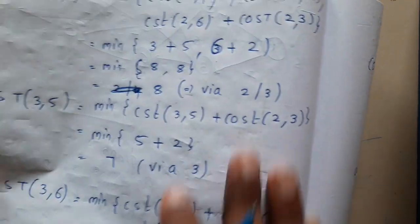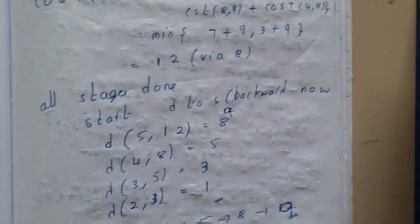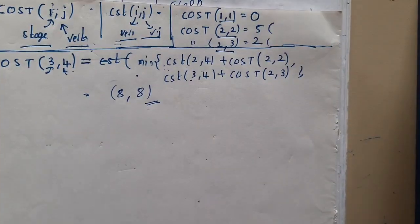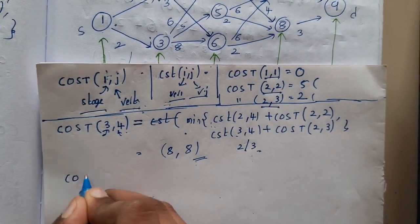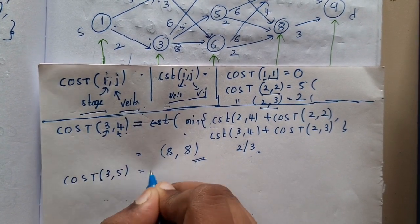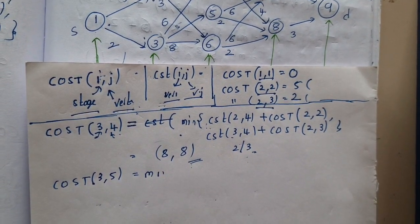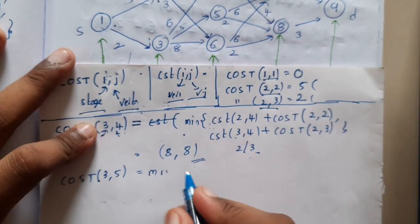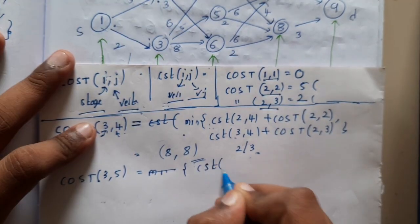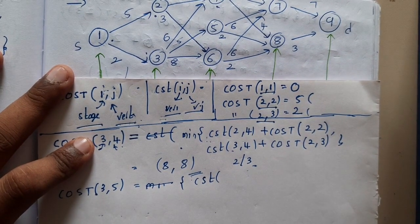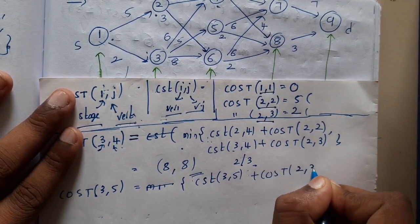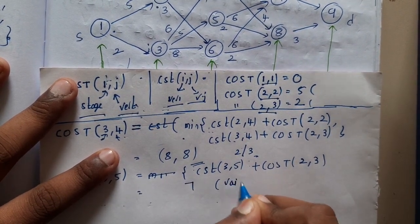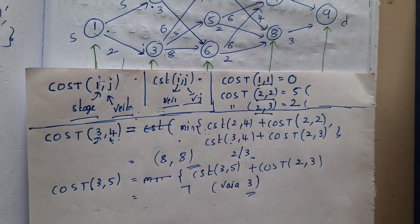Since both values are eight, you can write 'via 2 or 3' — either path is valid. Now for cost at stage three, vertex five: there is only one way to reach it, so no minimum function is needed. You directly compute cst(3,5) + cost(stage2, vertex3), which gives 7, via vertex 3. In this way you continue with the same logic.